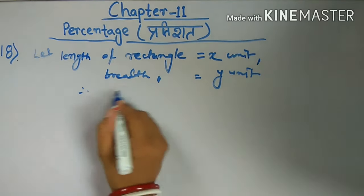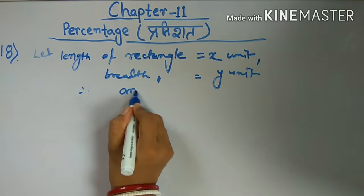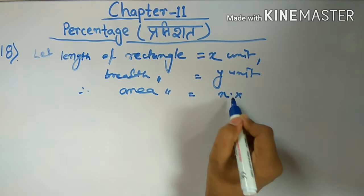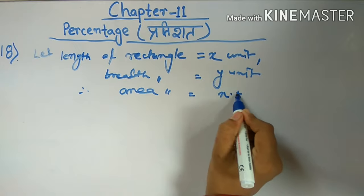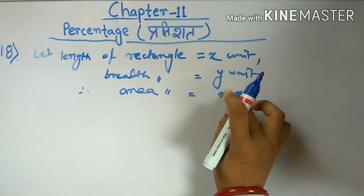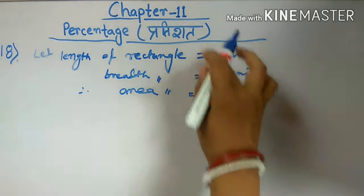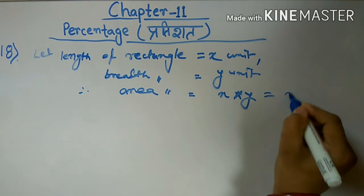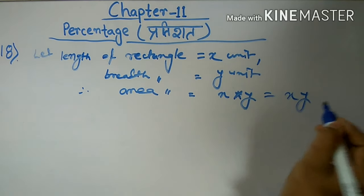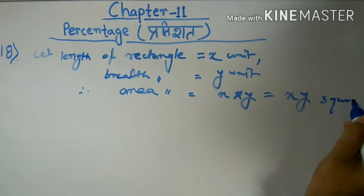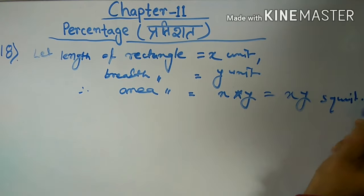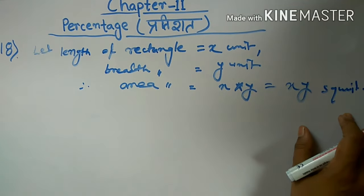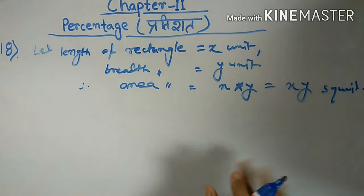When length and breadth are defined, we write the area. Area of rectangle equals x into y, that is length into breadth. So area equals xy square units.